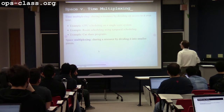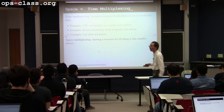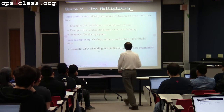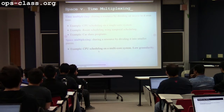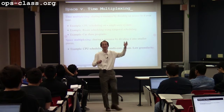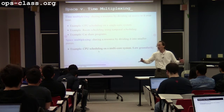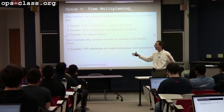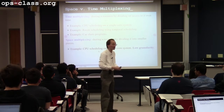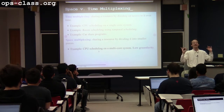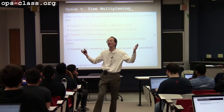Space multiplexing involves multiple things happening simultaneously, but to do that we divide into smaller pieces. An example is CPU scheduling on multi-core systems: with four CPUs, I can multiplex spatially by running four things simultaneously at any instant — however, those four things only get a quarter of the resources. The room analogy: if we divide the room into subgroups having sub-discussions simultaneously, multiple discussions happen at once but at the cost of not having the entire floor to yourself.